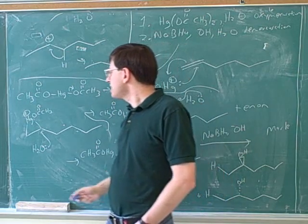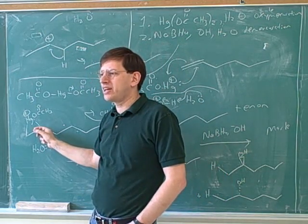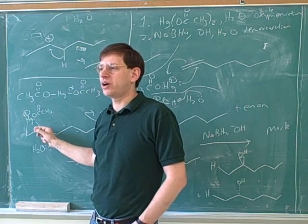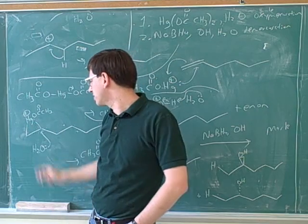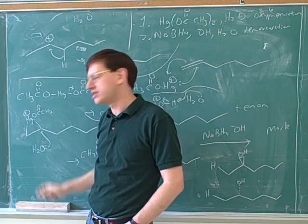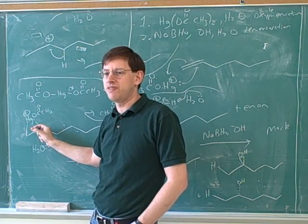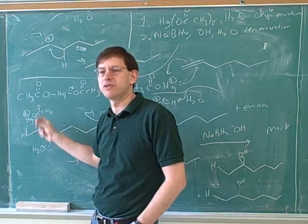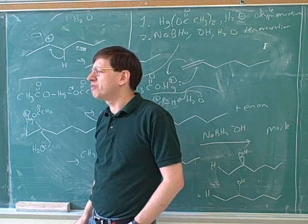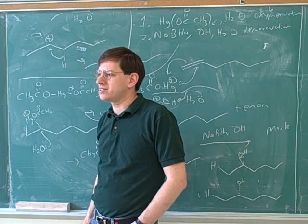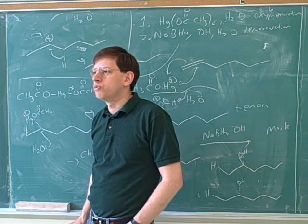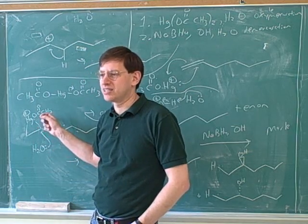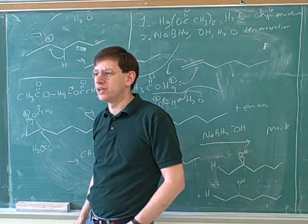The good thing about oxymercuration is that even though we said this had carbocation character, it's not a real carbocation, so we don't get rearrangements. Even though these have carbocation character, so to speak, they're not real carbocations and we don't get rearrangements. So, the advantage of having this mercurinium intermediate is it doesn't rearrange. Every once in a while you'll see other things in the organic chemistry class like that. There's all these little tricks in organic chemistry that allow you to do syntheses while avoiding carbocations because carbocations can give you rearrangements.